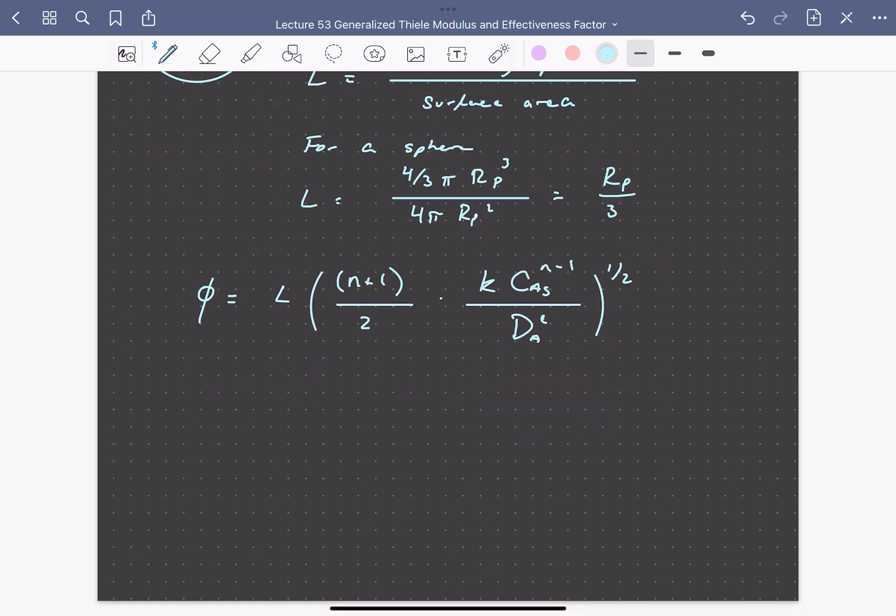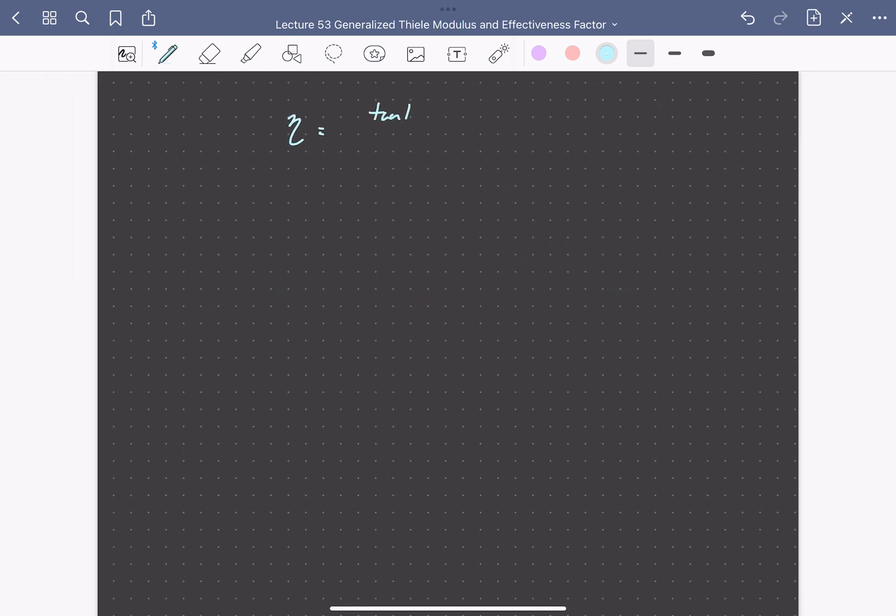When defined in this way, a general relationship exists between the effectiveness factor and the Thiele modulus. So we can write that the effectiveness factor is equal to the hyperbolic tangent of the Thiele modulus divided by the Thiele modulus. So looking at what this relationship looks like, we can plot it up.